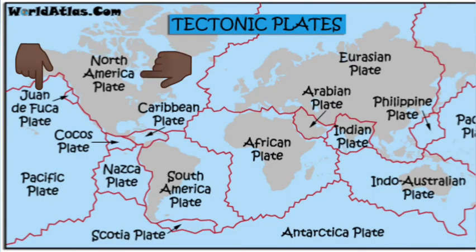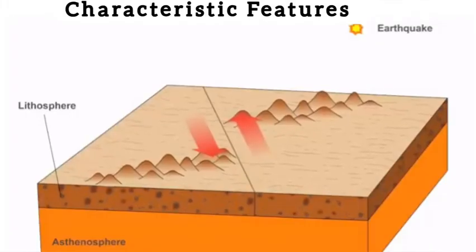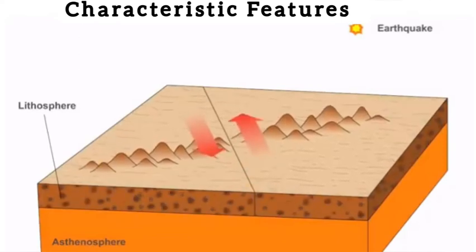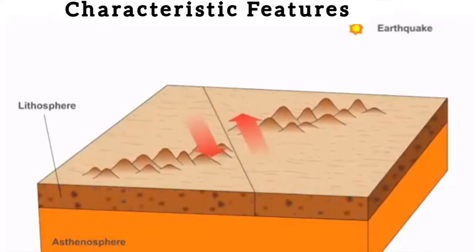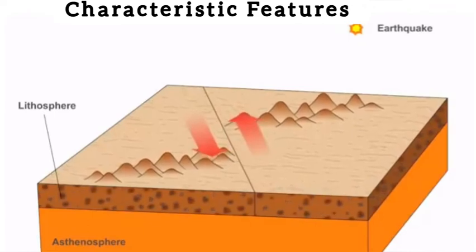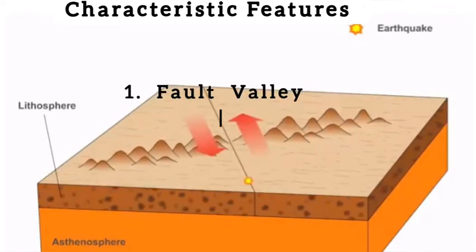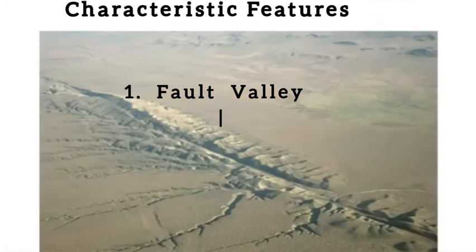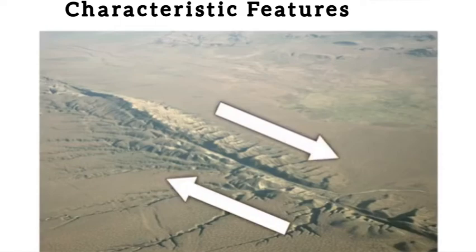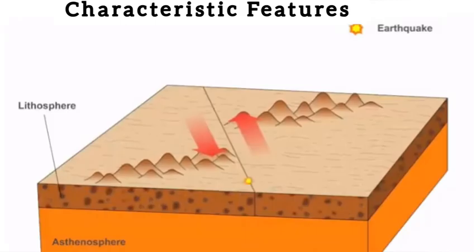Now we are going to look at the characteristic features of transform boundaries. Transform plate boundaries are characterized by the following features: the first is the formation of fault valleys, such as a fault valley in North America, which formed due to the interaction between the Juan de Fuca plate and the North American plate.